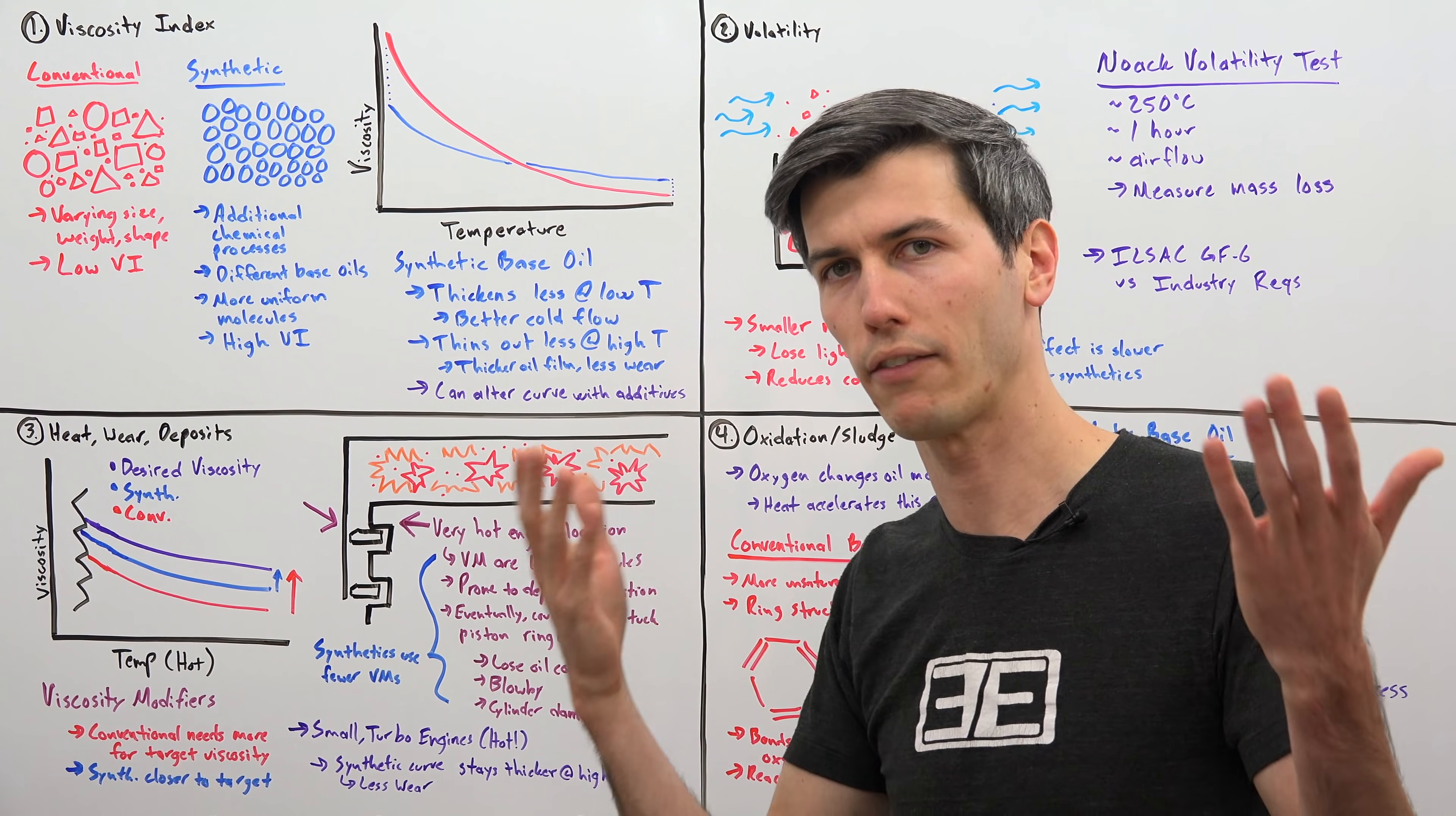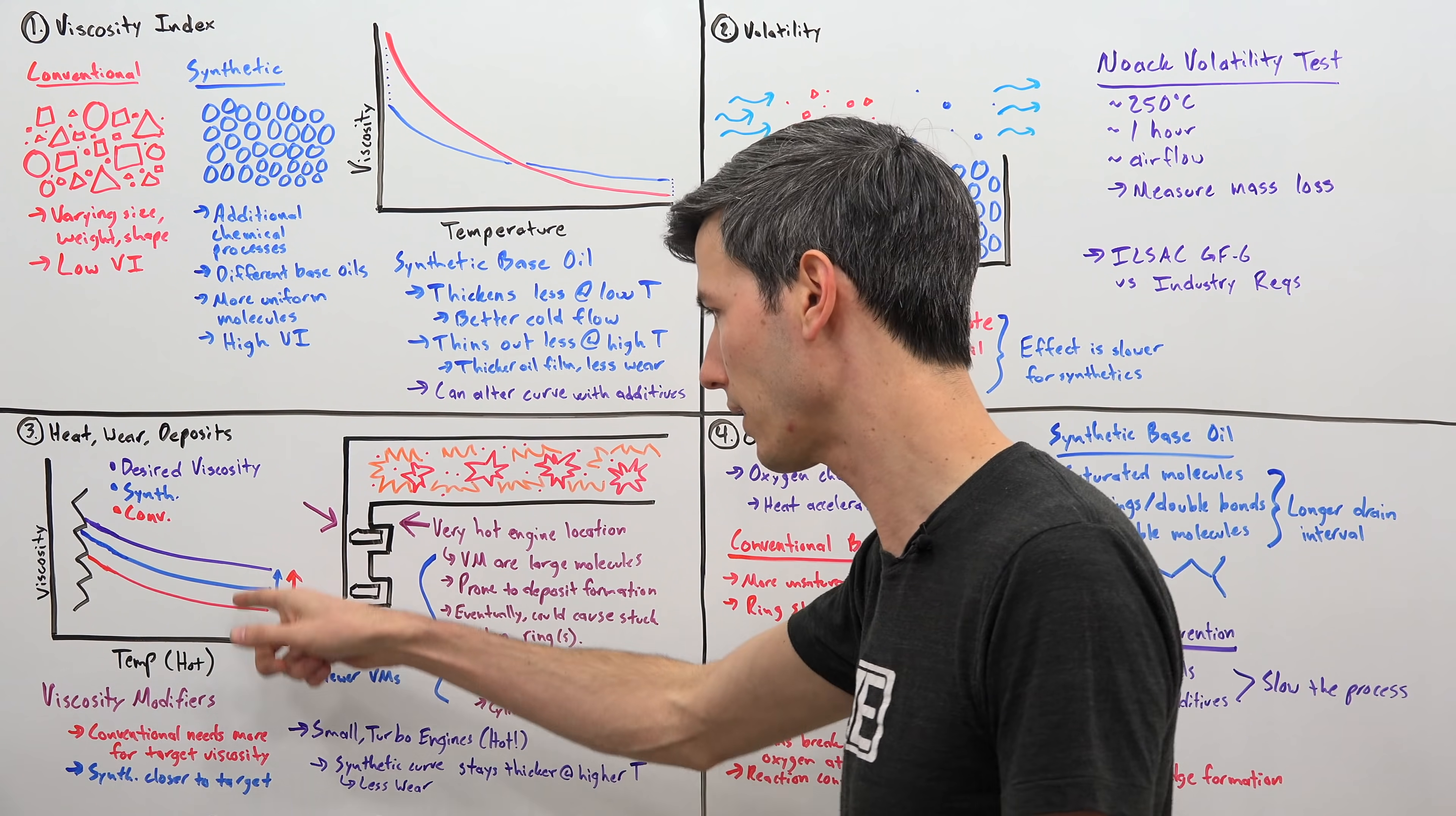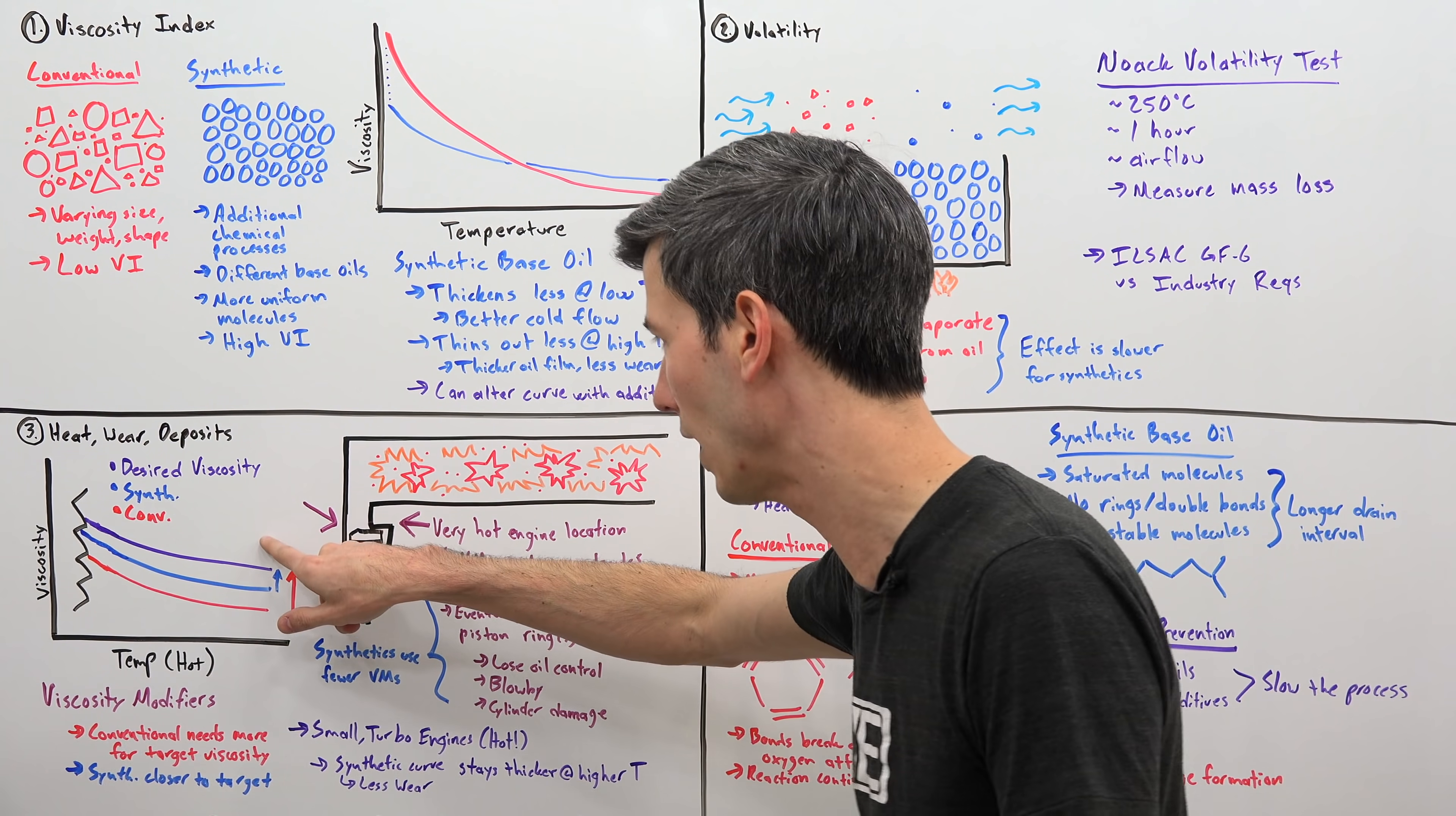Now why is that important? Ultimately, you're going to have a similar shape at the end, right? At that temperature, yes, you can get them all to line up. However, viscosity modifiers are very large molecules.